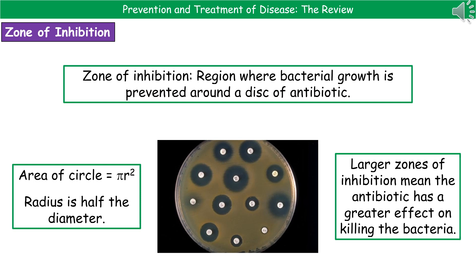On an agar plate, there's a complete covering of bacteria — the misty look. The little white discs are different antibiotics soaked into paper. Around them, you can see a clear circle — that is the zone of inhibition. The larger the zone of inhibition, the greater the effect of the antibiotic at killing that bacteria, so the one with the largest zone of inhibition is the best at killing that particular bacteria.